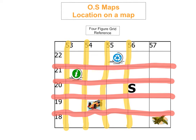So when we're looking for a four-figure grid reference we do three things. We always state the subzone letter, then we give the easting number, and then the northing number.